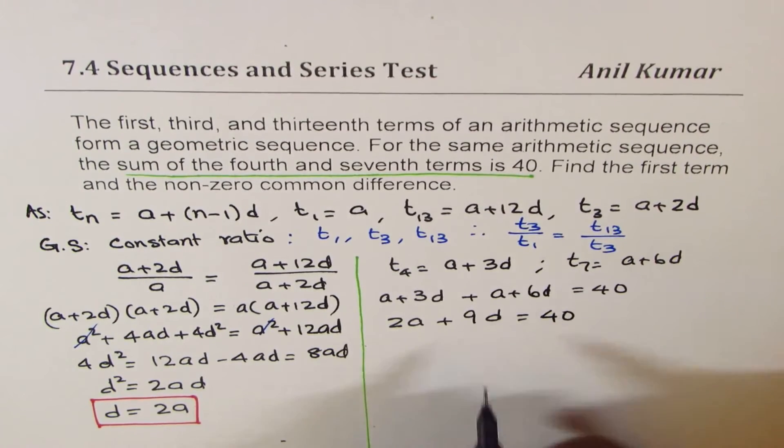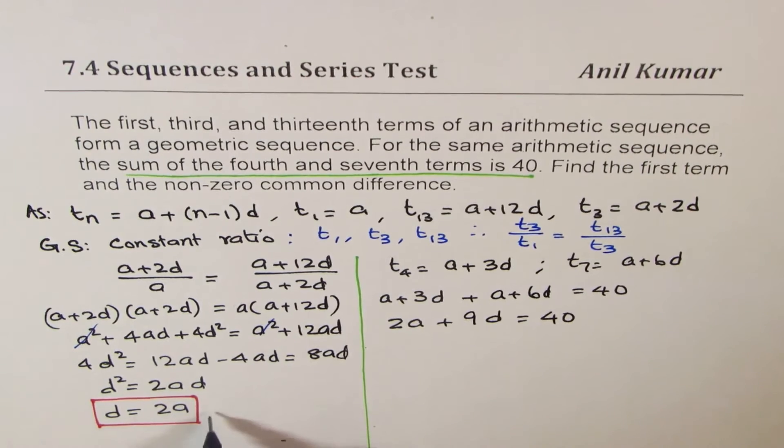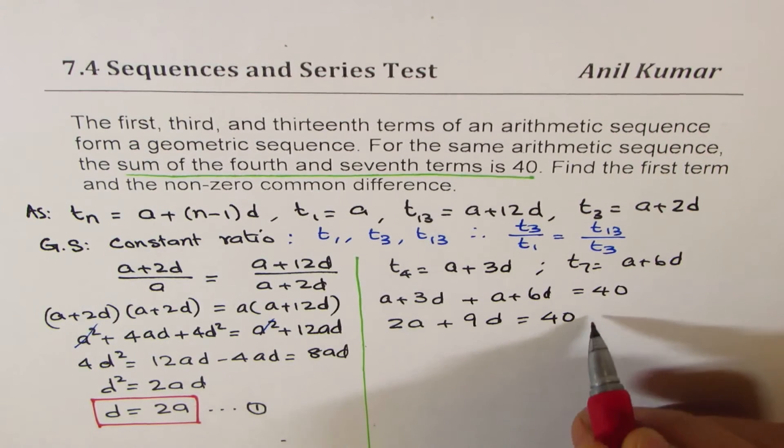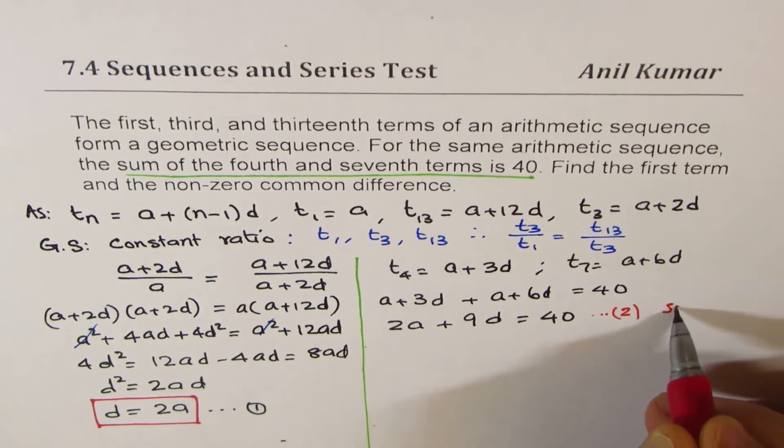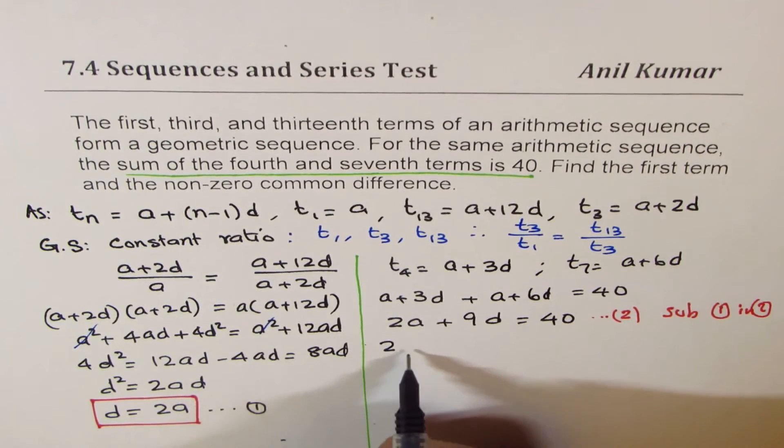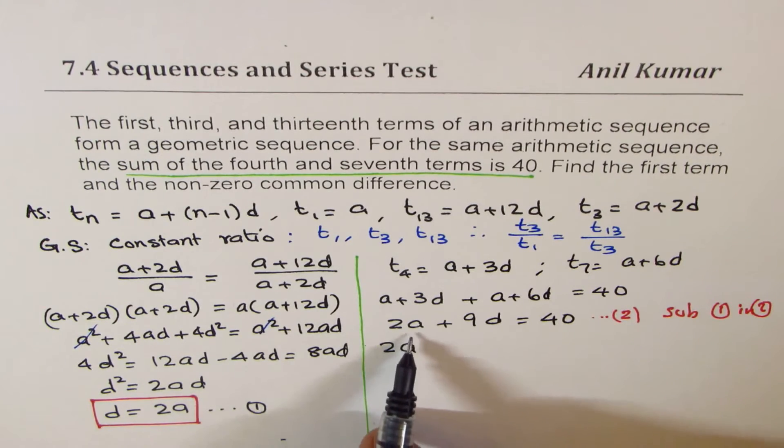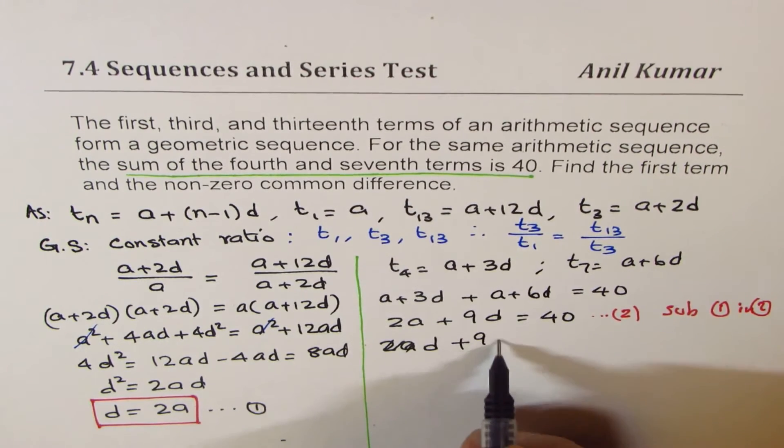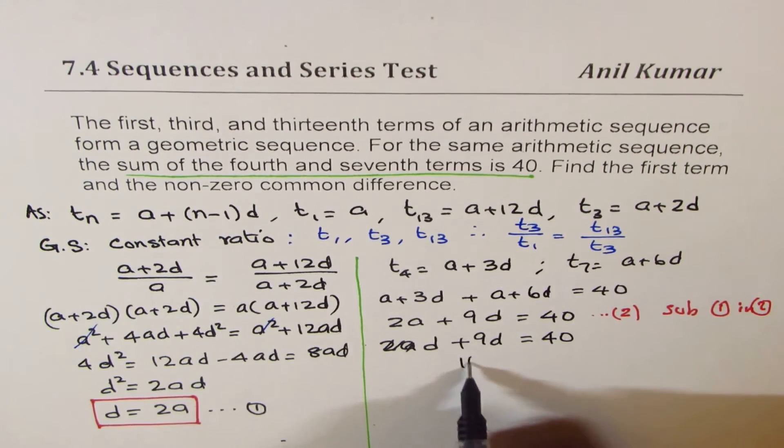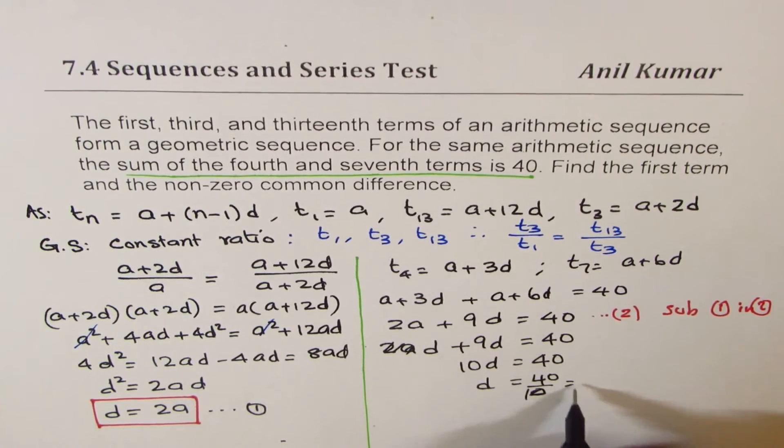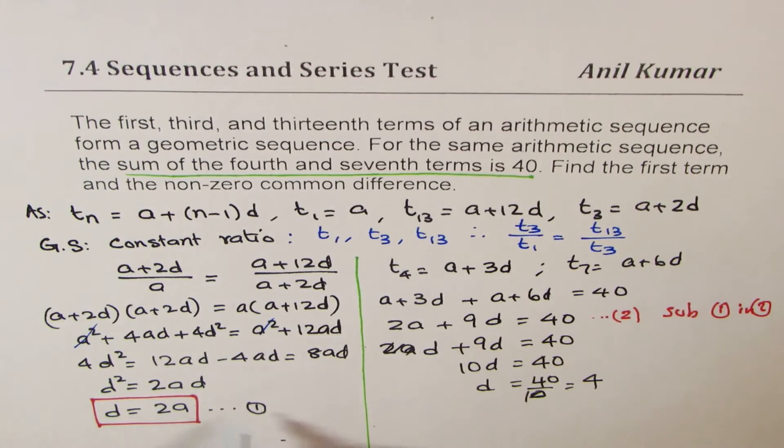And we know d is 2a, so let this be equation one. So I'm substituting equation 1 into equation 2. So instead of 2a, I am writing d. I get d plus 9d equals to 40, so 10d equals to 40, or d equals to 40 divided by 10, which is 4. So d is 4, and I can find what a is.